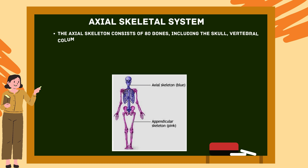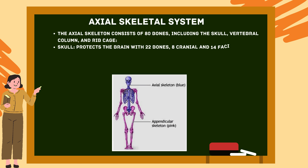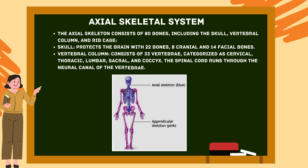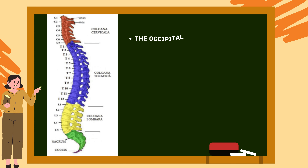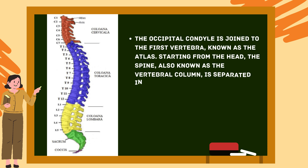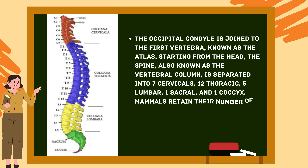The axial skeleton consists of 80 bones, including the skull, vertebral column, and rib cage. The skull protects the brain with 22 bones — eight cranial and 14 facial bones. The vertebral column consists of 33 vertebrae categorized as cervical, thoracic, lumbar, sacral, and coccyx. The spine is divided into seven cervicals, 12 thoracic, five lumbar, one sacral, and one coccyx. Mammals retain their number of cervical vertebrae.